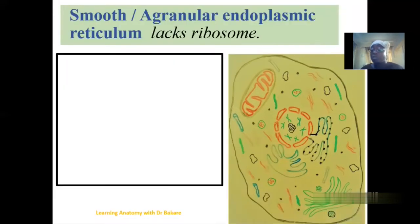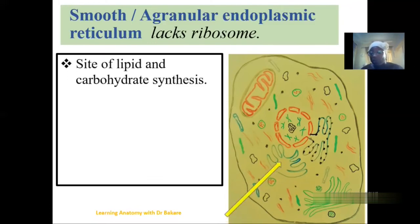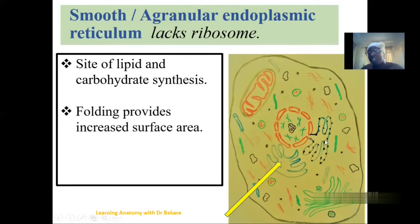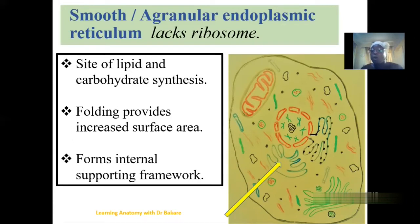The smooth endoplasmic reticulum is also referred to as the agranular endoplasmic reticulum — it is devoid of ribosome granules, so its surface appears smooth. The smooth endoplasmic reticulum is responsible for lipid and carbohydrate synthesis. Because it has the same highly coiled and branched configuration as the rough endoplasmic reticulum, it also provides an increased surface area for the synthesis of lipids and carbohydrates, and also provides an internal structural framework for the cell.